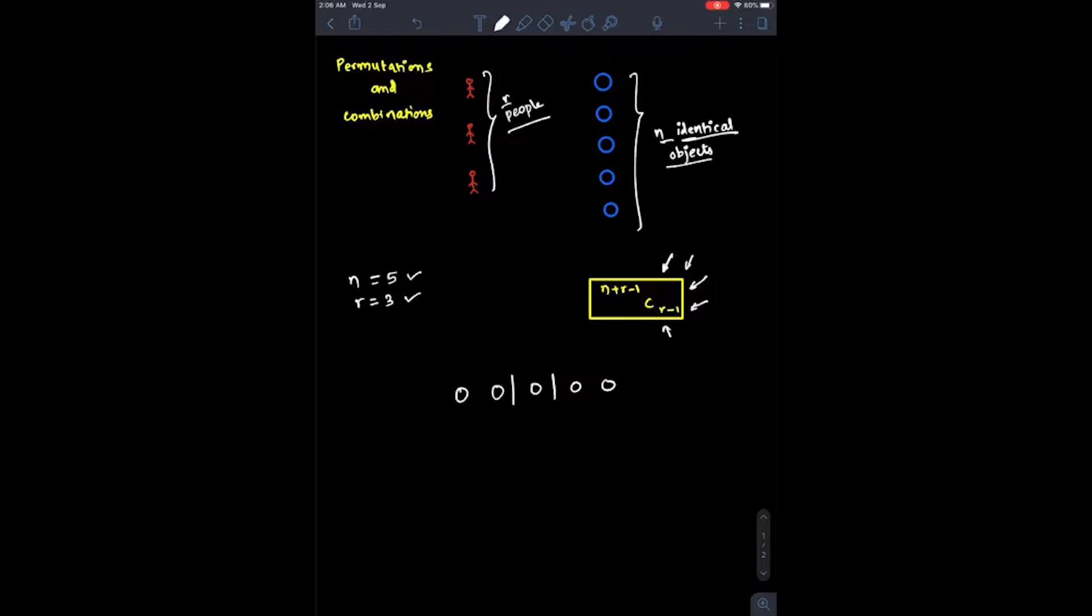These two sticks will create three compartments in this series. The first compartment will be what the first person gets, the second compartment is what the second person gets, and the third compartment is what the third person gets. Now you'll notice one thing: since we have three people, we need two sticks. If we had four people, we would have required three sticks. So basically, the number of sticks required to create n compartments is n minus 1.